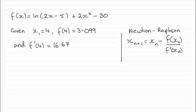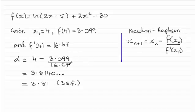So substitute those values in and you should find that your approximation for alpha takes on this sum here. And if you work that out you find you get 3.8140 and so on, which rounded to three significant figures is 3.81 as requested. Okay.